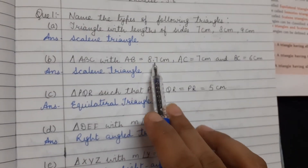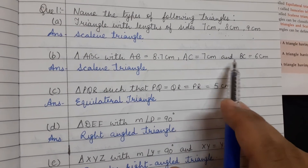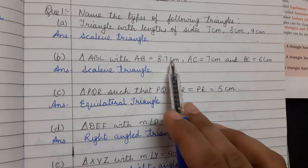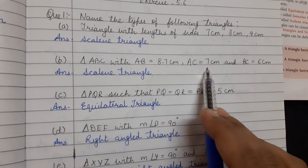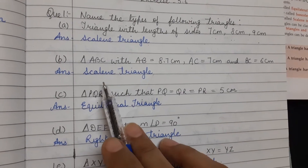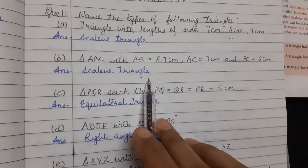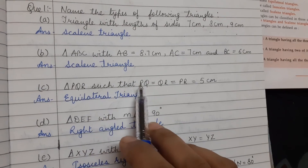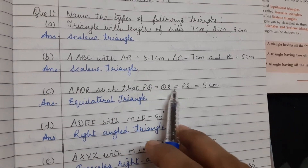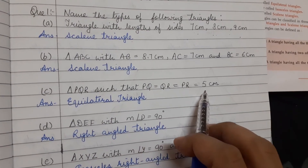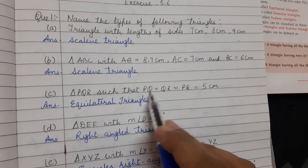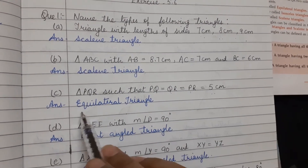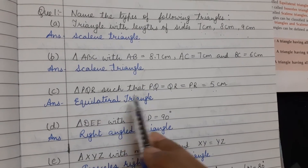Triangle with AB = 8.7, AC = 7, and BC = 6. Again, all three sides are of unequal length, so this is also a scalene triangle. Triangle PQR such that PQ = QR = PR = 5 cm. All three sides are of equal length, so this type of triangle is an equilateral triangle.